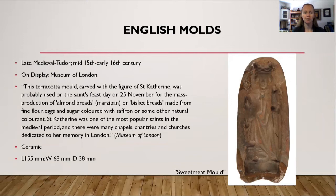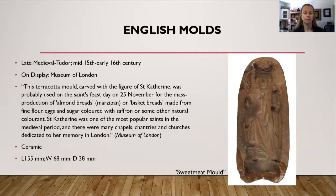This is an example of an English mold — it's late medieval, early Tudor, from about the mid-15th into the early 16th century, on display at the Museum of London. It's made from terracotta, a carved figure of Saint Catherine, and was probably used on the saint's feast day, November 25th, for the mass production of almond breads or biscuit breads. Saint Catherine was one of the most popular saints in the medieval period, with many chapels, chantries, and churches dedicated to her memory in London.